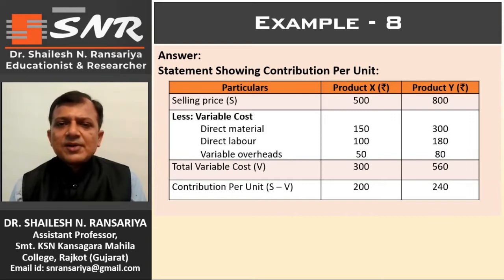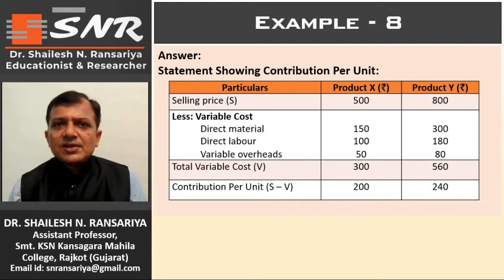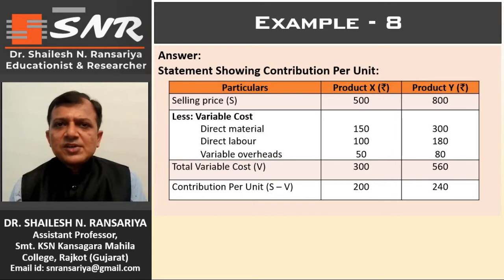Statement showing contribution per unit. Selling price: Product X 500, Product Y 800. Less variable expenses — direct material: 150 and 300; direct labor: 100 and 180; variable overheads: 50 and 80. Total variable cost: 300 and 560. Contribution per unit equals selling price minus variable cost: Product X is 500 minus 300 = 200, Product Y is 800 minus 560 = 240.